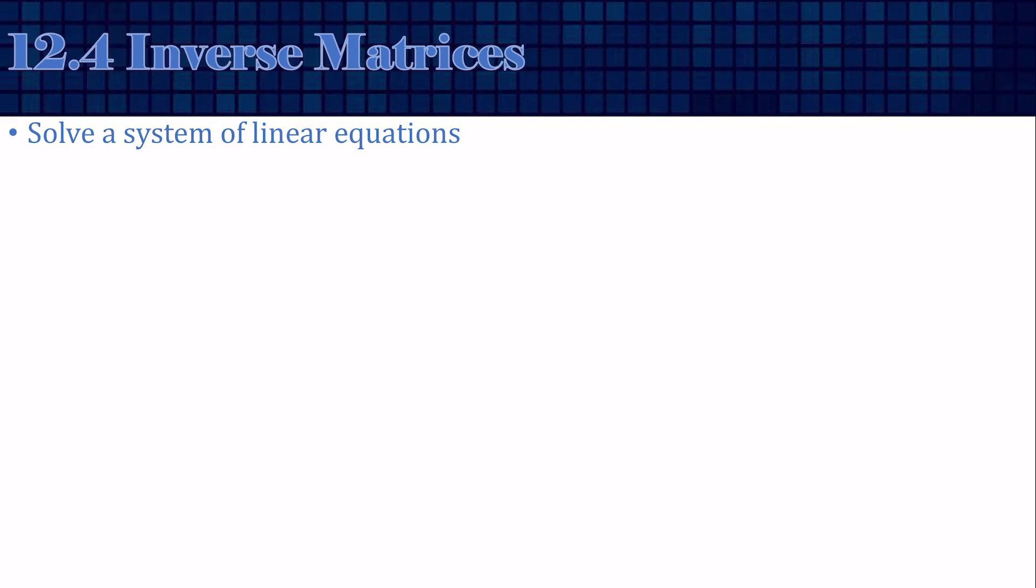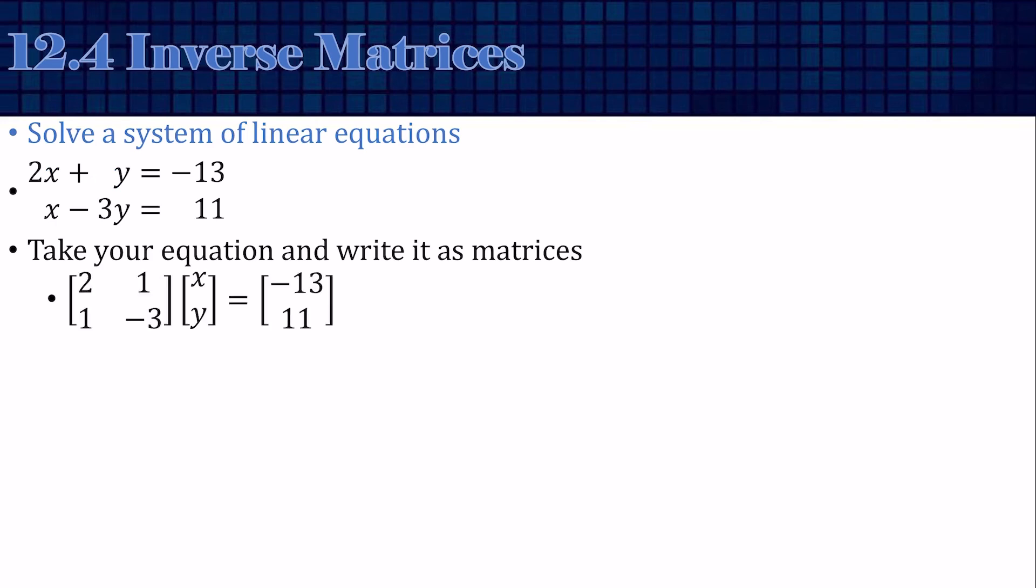I promised that we'd use matrices to solve a system of linear equations. Here's my system of equations. We're going to write these as matrices. The first matrix is going to be the coefficients, the 2, 1, 1, negative 3, and then the variables, and then the constants. This is in the form AX equals B, so we're going to solve it the same way we just solved our last one.